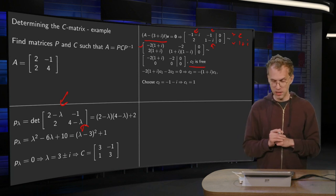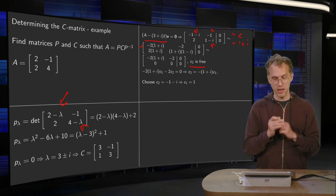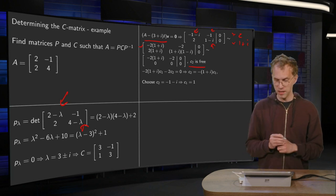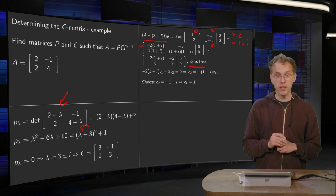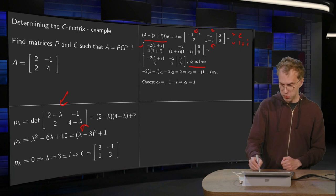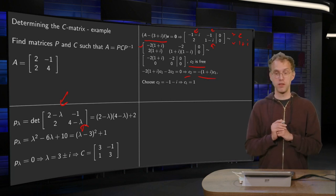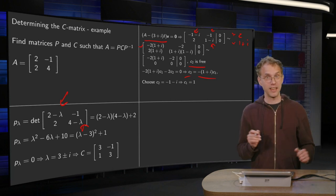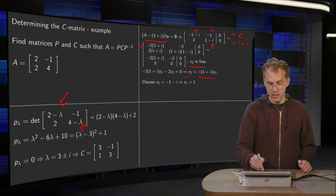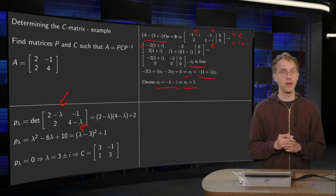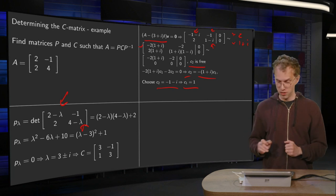c2 is free. And our first equation tells us minus 2 times (1 plus i) times c1 minus 2 times c2 equals 0. And we can solve for c2 now, of course. Take it to the other side and divide it by 2. So you have c2 equals minus (1 plus i) times c1. Now, what do we choose for c2? A convenient choice is to choose c2 equals minus 1 minus i because that implies that c1 equals 1. So we have a bit of an iffy choice for c2, but that makes our c1 nice.